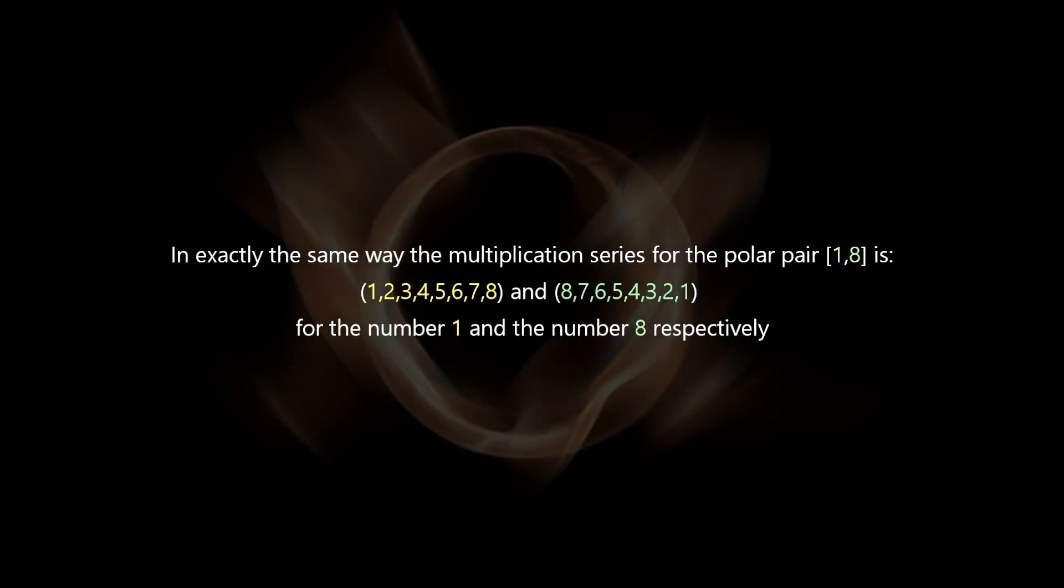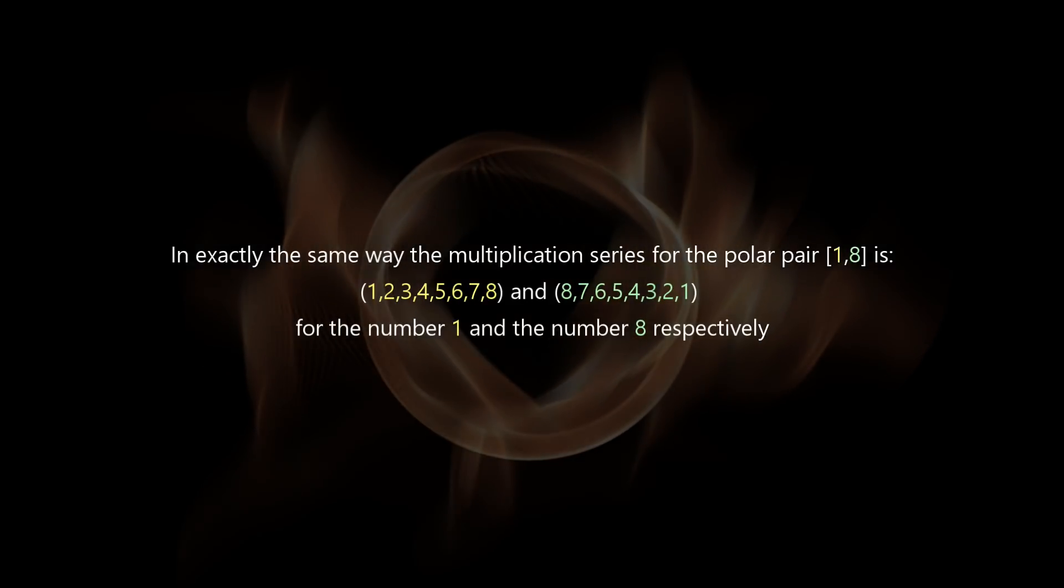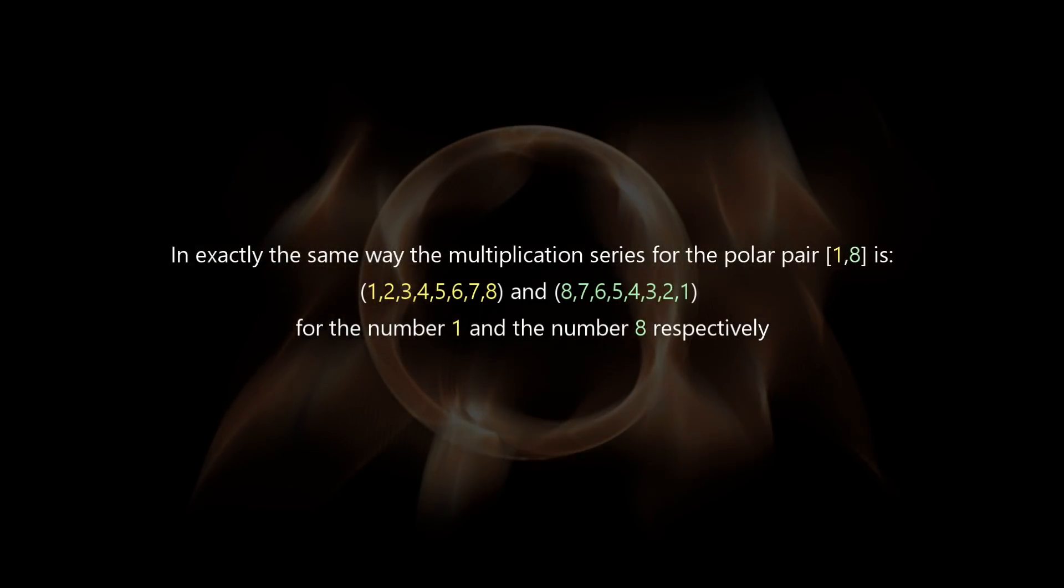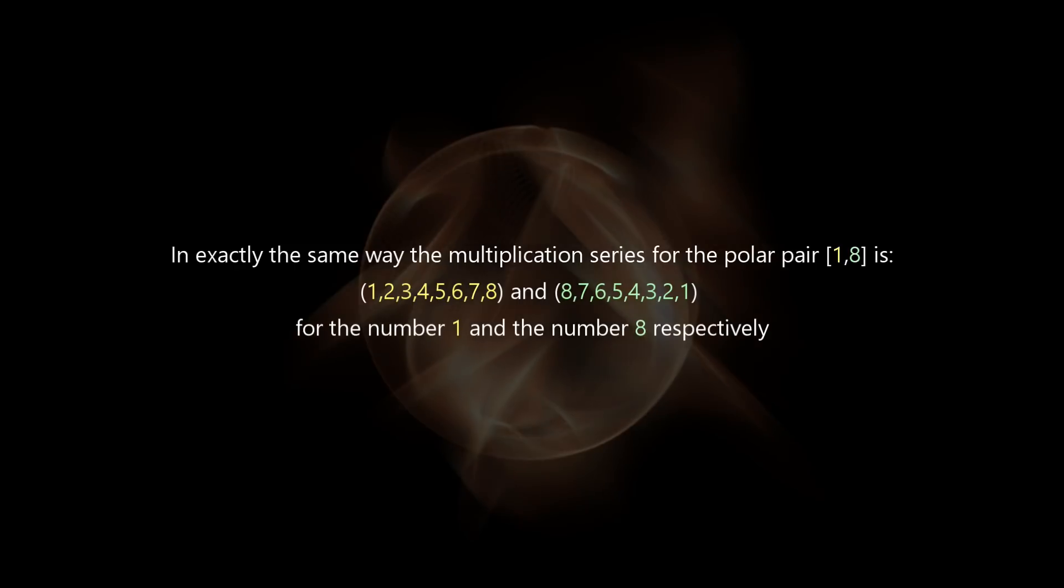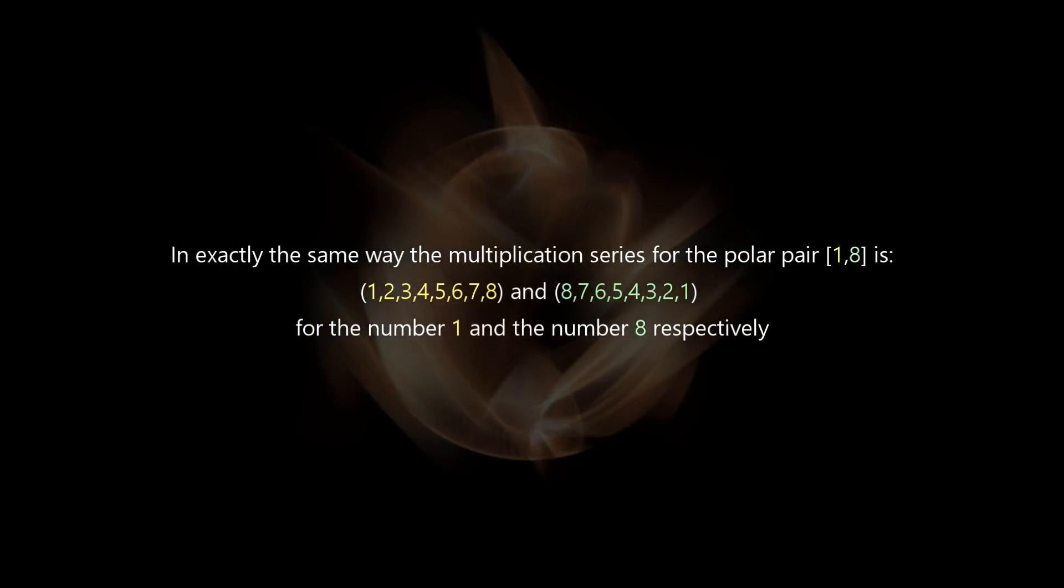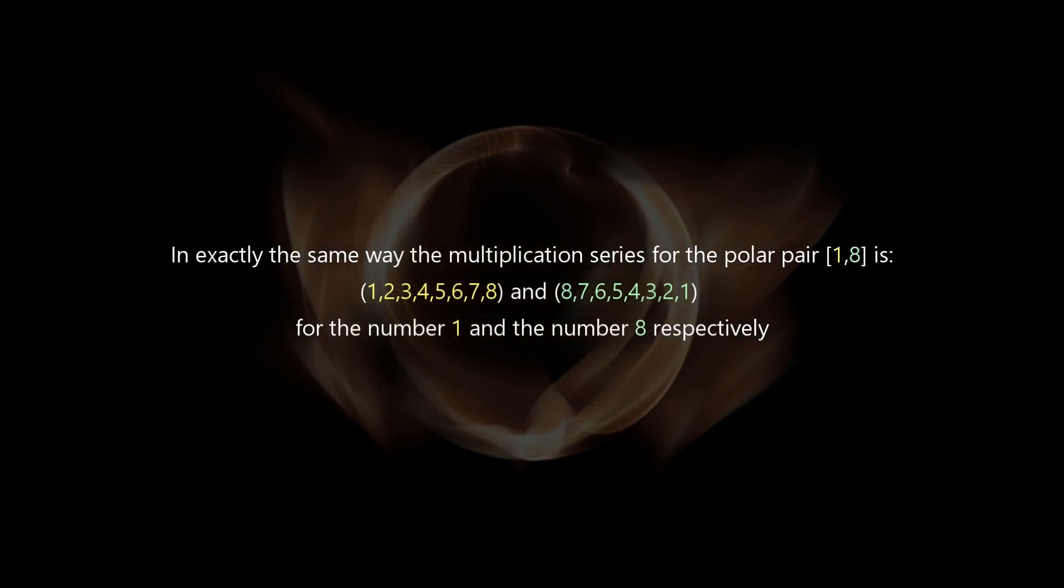In exactly the same way, the multiplication series for the polar pair 1 and 8 is 1, 2, 3, 4, 5, 6, 7, 8 and 8, 7, 6, 5, 4, 3, 2, 1 for the number 1 and the number 8 respectively.